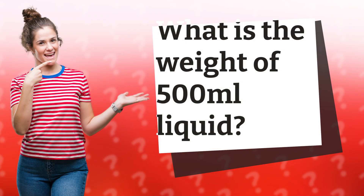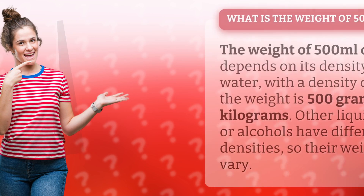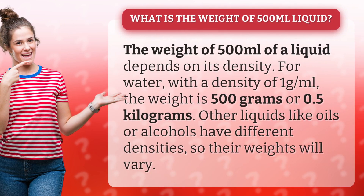What is the weight of 500 milliliters of liquid? The weight of 500 milliliters of a liquid depends on its density. For water, with a density of 1 gram per milliliter, the weight is 500 grams or 0.5 kilograms.